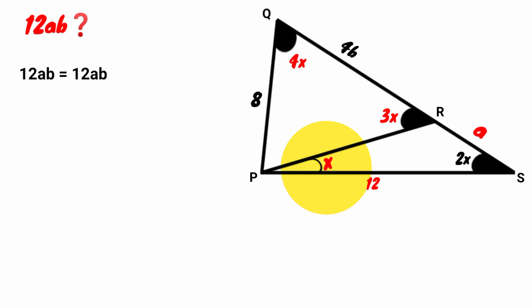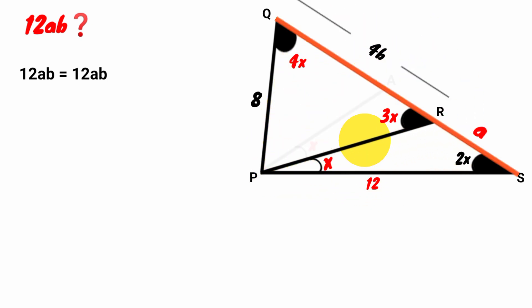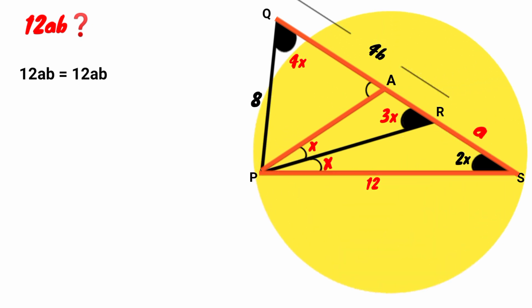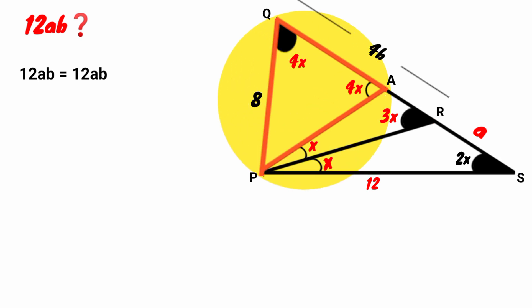Now from point P, draw a straight line segment to a point A on side QS at an angle x to this side. Now look at angle PAQ — it is also an exterior angle of this triangle, therefore it will be equal to the sum of the two opposite interior angles. Looking at triangle APQ, we observe that two of its angles both have sizes 4x each, making it an isosceles triangle. The sides facing the base angles are equal in length, so since this side has length 8 units, this side must also be 8.